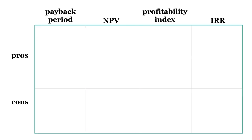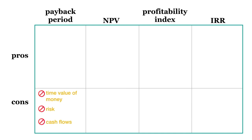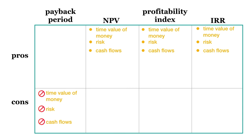Now that we know how to calculate payback period and the profitability index, we can compare these alternatives to what we know about NPV and IRR. Compared to the other three investment evaluation methods, payback period is simply not on the same level — it fails to account for the time value of money, risk, and cash flows that occur after the initial cost has been recovered. However, we should still keep the payback method in our toolkit, since it's quick and easy to do. You may use it as an initial test of feasibility before you dive into more complex calculations.